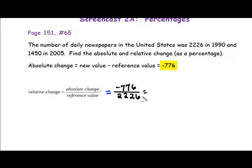If we take negative 776 and divide it by 2,226, we will get negative 0.349. It's always a good idea, because we're going to be turning this to a percentage, to round to the nearest thousandth. So that's what we're going to do here. Now, to convert this to a percentage, which is what the problem is asking for, we need to multiply by 100.